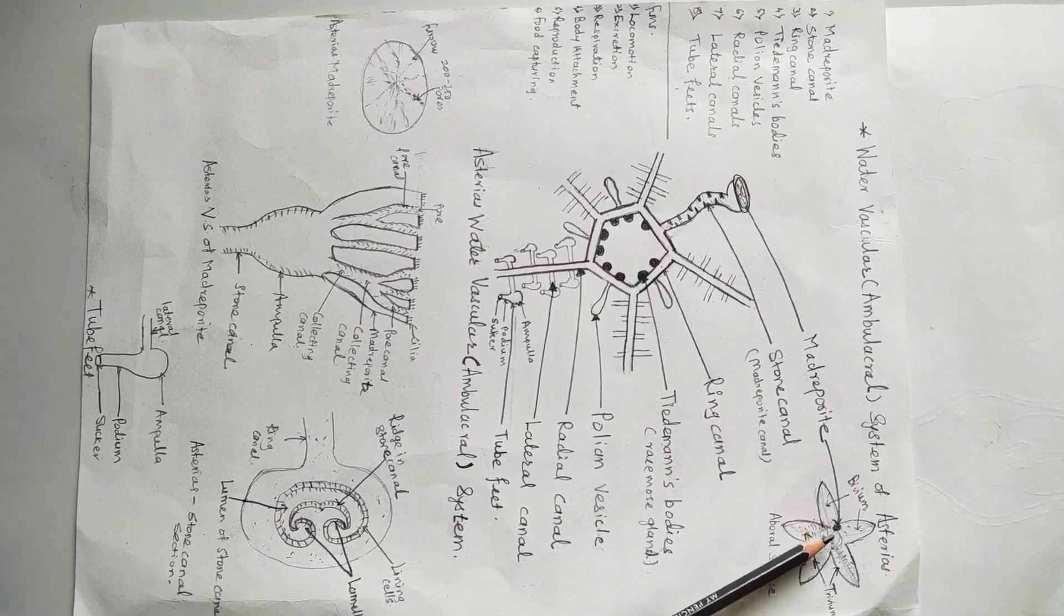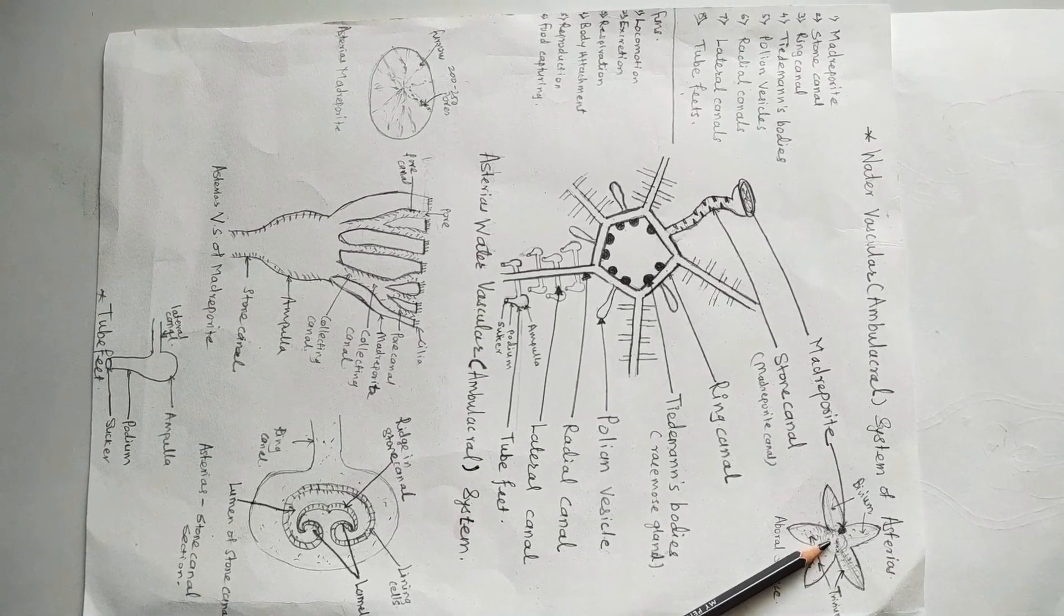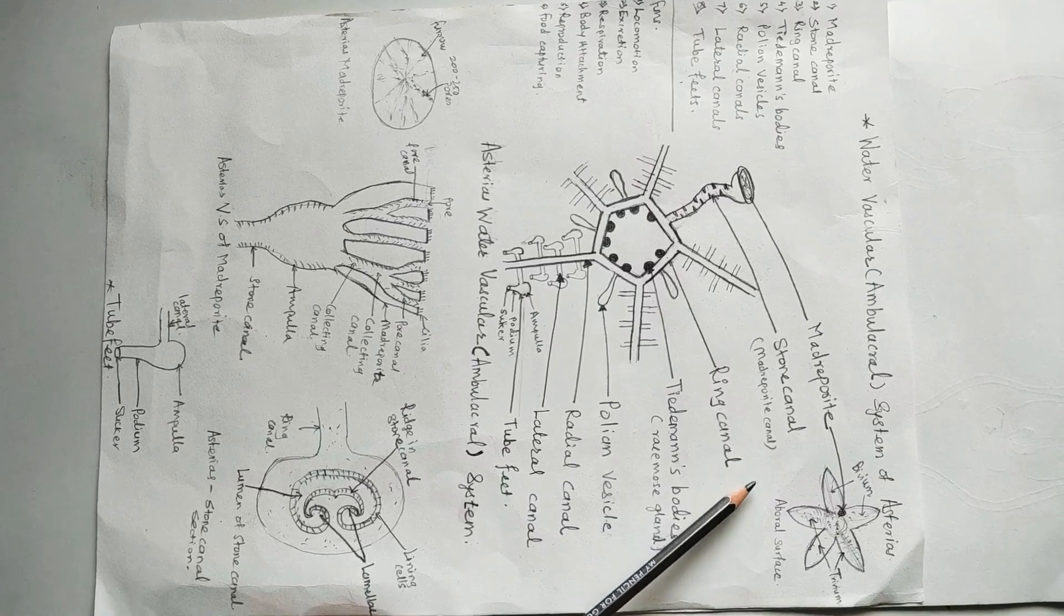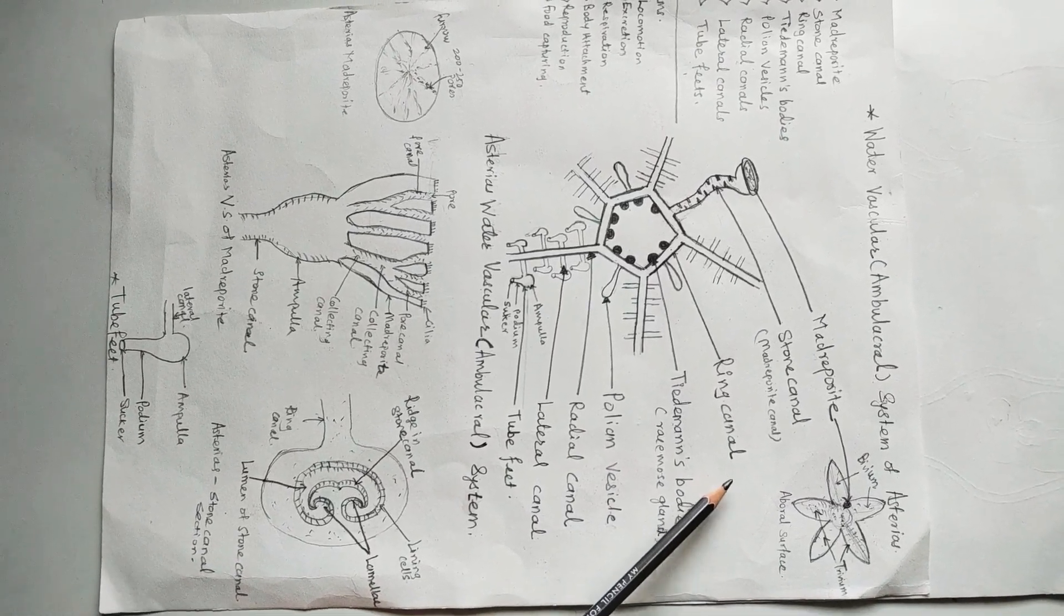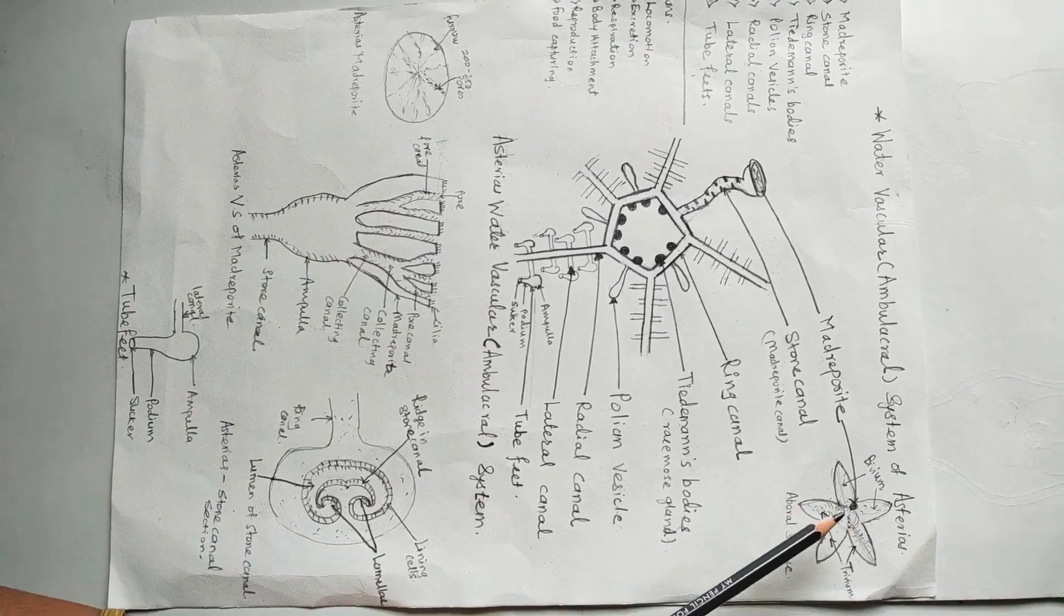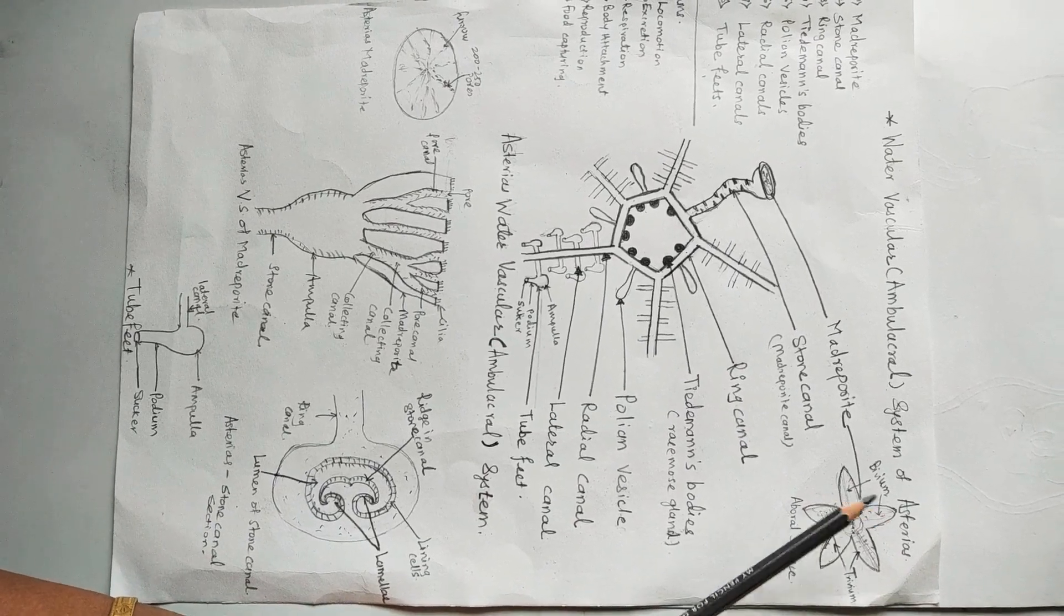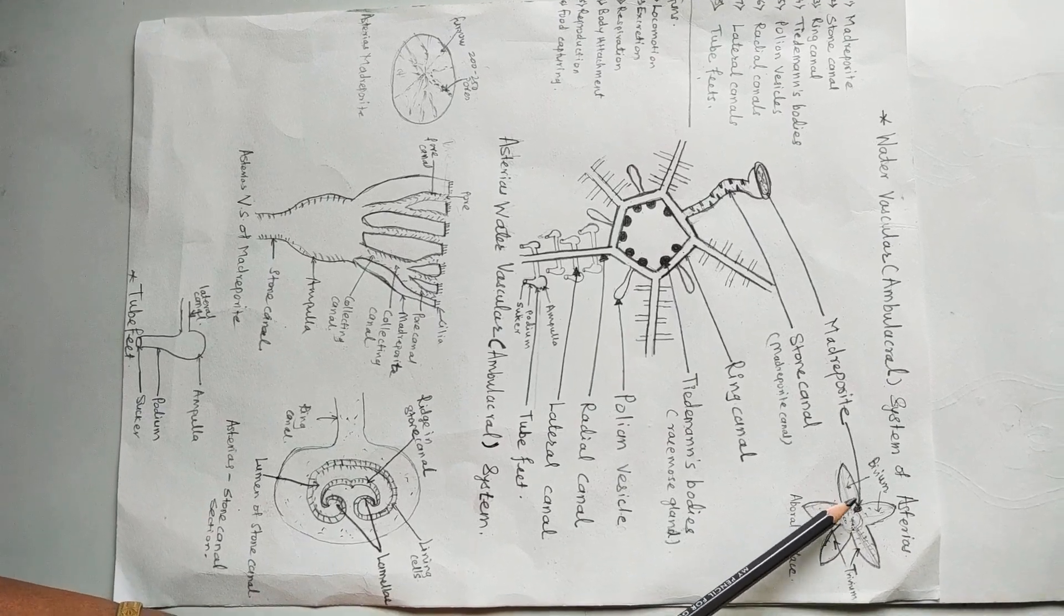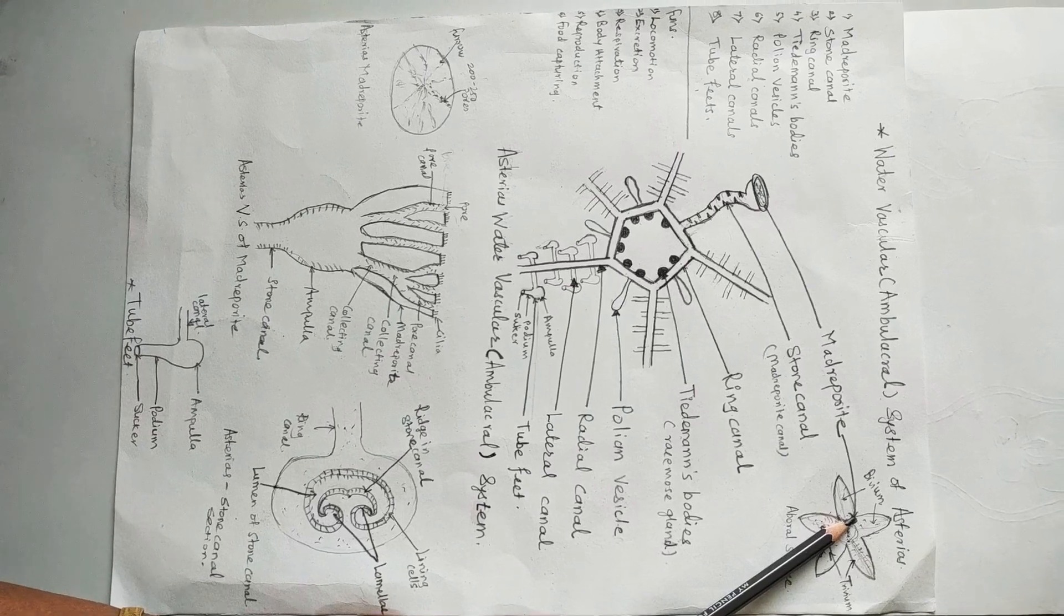It has two surfaces: oral surface and aboral surface. Oral surface has the mouth that faces always towards the ground or the bottom of the water body, and the aboral surface has the anus and the madreporite that faces towards the surface of the water body. The madreporite is situated at the basis of two arms, that is called the interradial position.